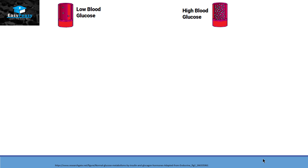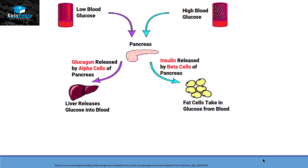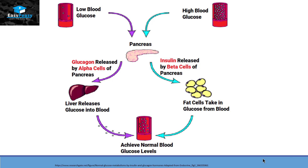In both cases they will provide a signal to the pancreas. The pancreas is going to release hormones. In case of low blood glucose, the pancreas will release glucagon from alpha cells, and that will trigger the liver cells to convert glycogen into glucose. On the other hand, if we have high blood glucose, then the pancreas will release insulin from beta cells, and this insulin will order the glucose to be taken up by fat cells, providing balance to the blood glucose level.